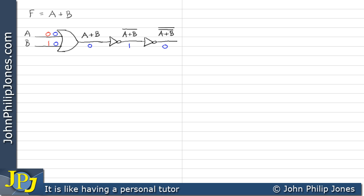If I input a zero and a one, I'll get a one at the output of the OR gate, which will go through the NOT gate to become a zero, and then through the next NOT gate to be turned back to a one. If I choose a one and a zero, I'll have another one at the OR gate output, converted to a zero by the NOT, then back to a one. Finally, with two ones at the input, I'll have a one, then a zero, then back to a one.